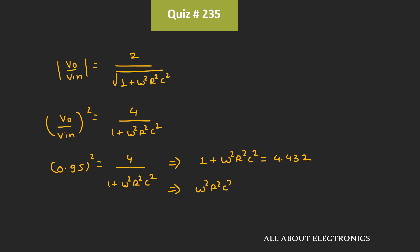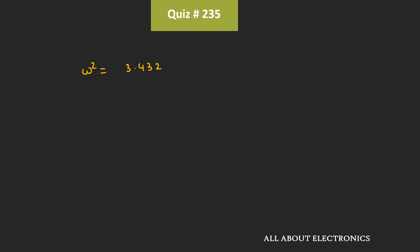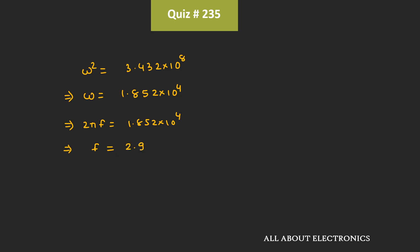Therefore ω²R²C² = 3.432. The value of R = 10 kΩ and C = 10 nF, so the RC time constant = 10⁻⁴ seconds. From this, ω² = 3.432 / (R²C²) = 3.432 × 10⁸, giving ω = 1.852 × 10⁴ rad/s. Since ω = 2πf, the frequency f = 2.948 kHz.